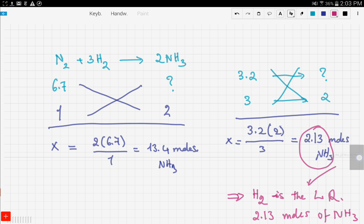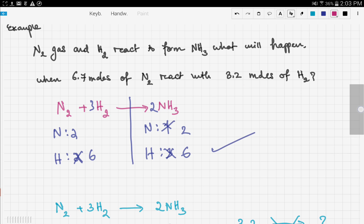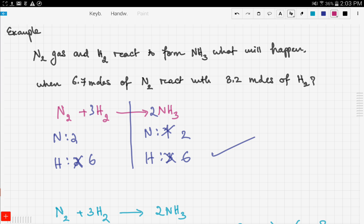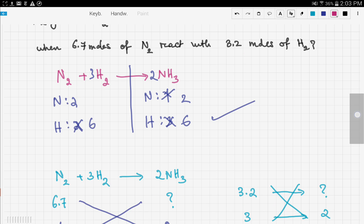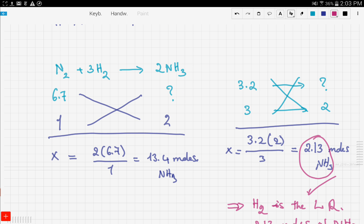Let's recap on how to solve limiting reagent questions. First, you need to write out the chemical reaction. Second, you need to balance, as we did here. Then you have two givens. Limiting reagent questions often give you two givens. Here he gave you 6.7 moles of nitrogen and 3.2 moles of hydrogen. You do the same step for both, and you find which produces the least number of moles. When you locate that, this is your limiting reagent, and this is the amount formed from the reaction.